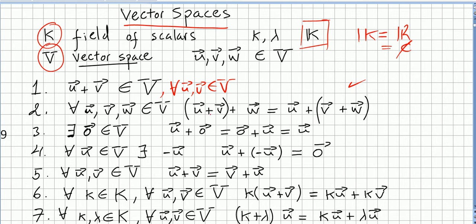Vector addition is associative — you can add u plus v and then add w, or you can first add v plus w and then add to u, and that should be the same. For any vector in the vector space, there will be a zero vector — this is not the number zero, this is a vector zero, an entity zero — such that u plus zero is the same as zero plus u, which equals u.